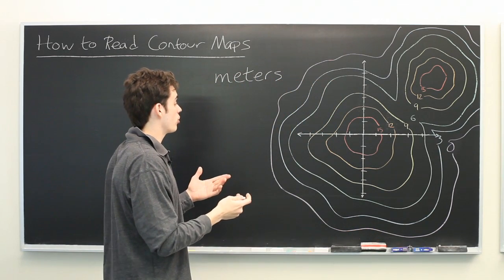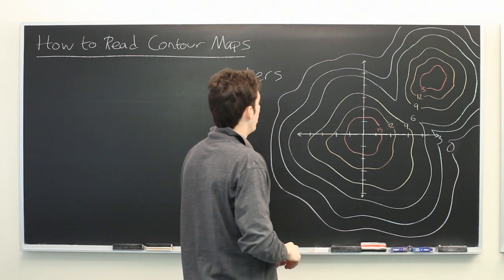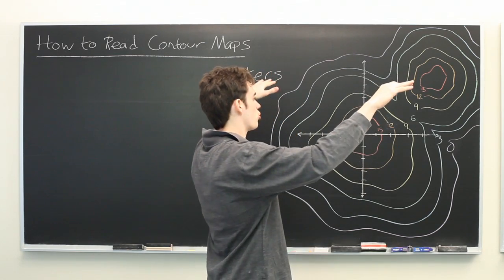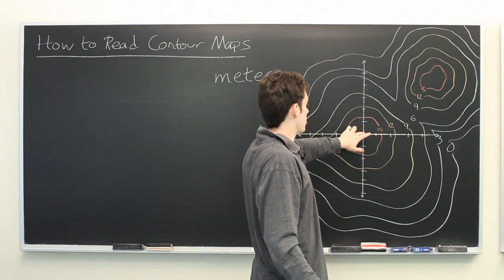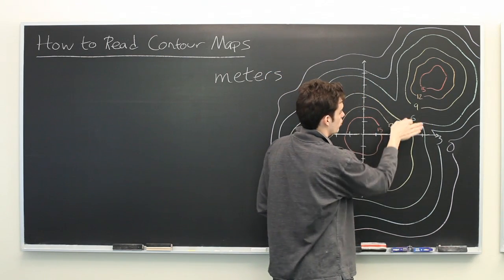What this contour map shows us, if we try to visualize this as a three-dimensional object, it looks like there's two short hills right next to each other. One with a peak here, and one with a peak here, and then a sort of valley in between them.